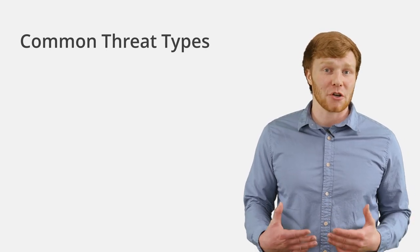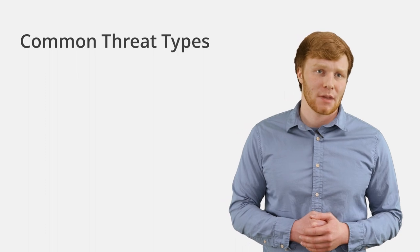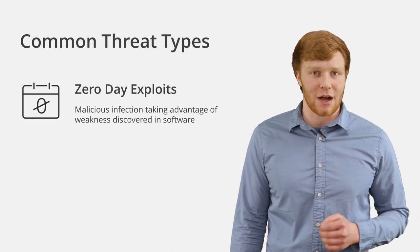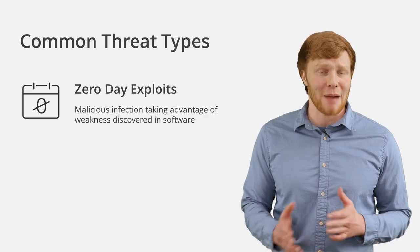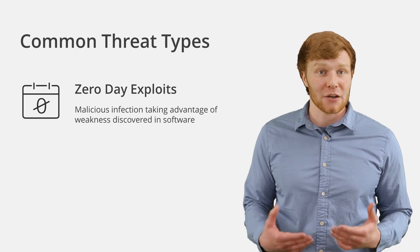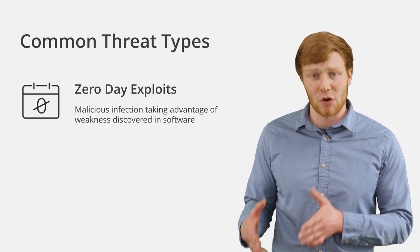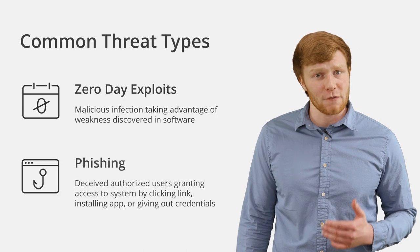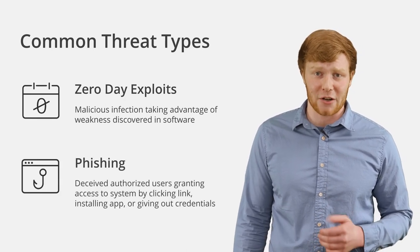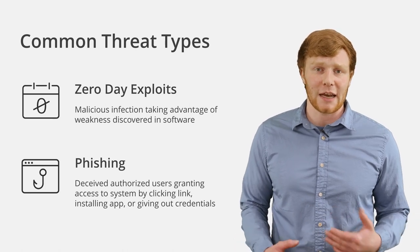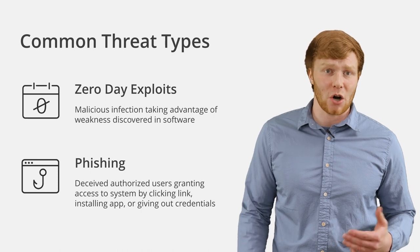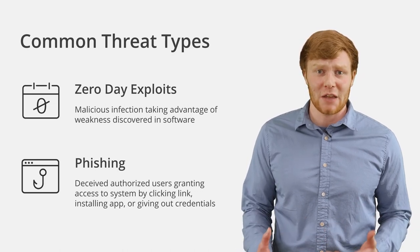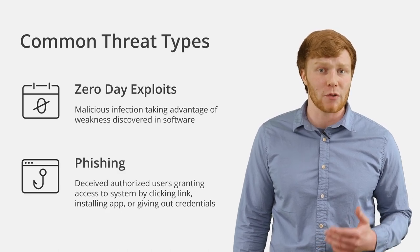There are two common methods by which a hacker can hit your infrastructure with a ransomware attack. The first are zero-day exploits — known weaknesses found within software that are deployed before developers have a chance to release a patch or update. Hackers can target any user or organization running the vulnerable version. The other common vector is a successful phishing attempt, where deceived authorized users allow the hacker access by clicking a link, installing an app, or providing their credentials. This is usually done with a spray-and-pray dispersal, targeting large numbers of organizations hoping at least one user falls for the crafted messaging.